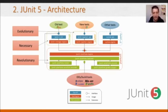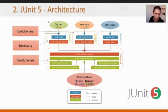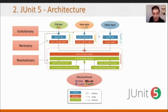Inside the platform, we execute what they call an engine — basically a programming model. Out of the box, JUnit 5 provides two engines: one for legacy tests, which is the Vintage component for JUnit 3 and 4, and the most important part for test developers — the Jupiter component — which is the brand new programming model for JUnit 5 tests.